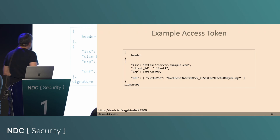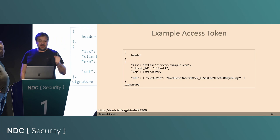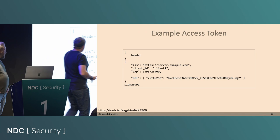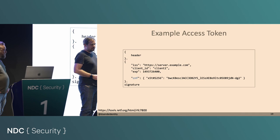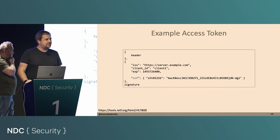If you wonder how such an access token looks, there's some JWT stuff and a special claim called CNF or confirmation. The confirmation means how can the client confirm it knows the secret — that's the X509 thumbprint in SHA-256. That's the SHA-256 hash of the X509 certificate.